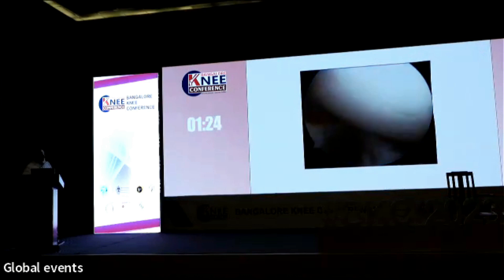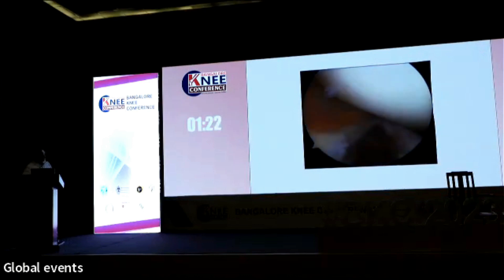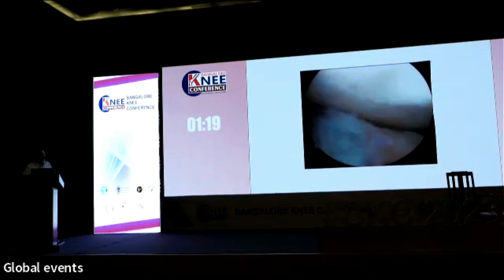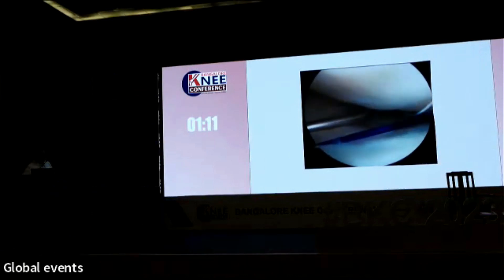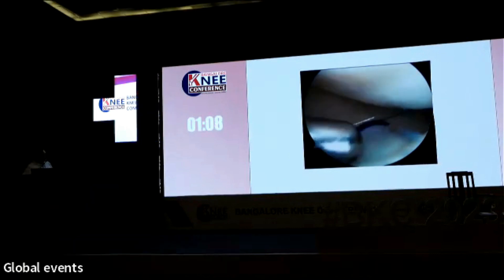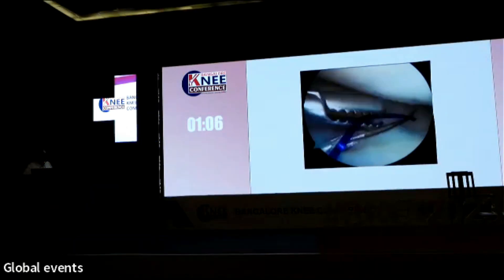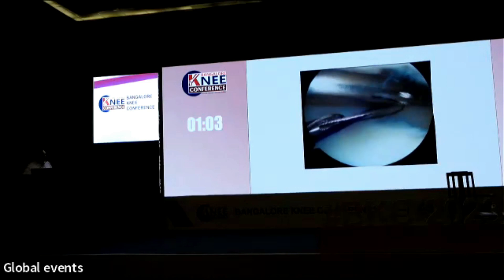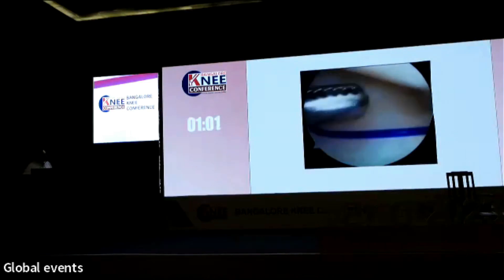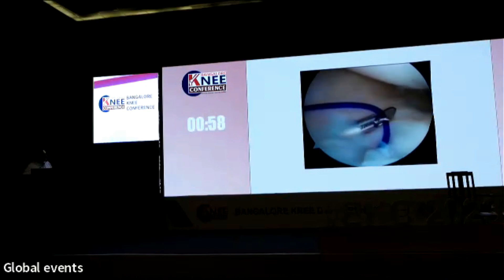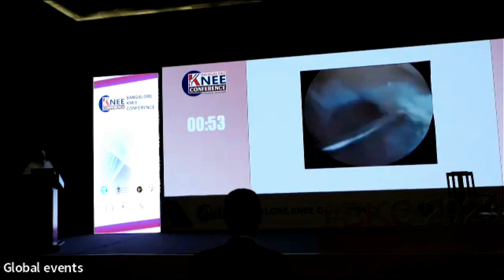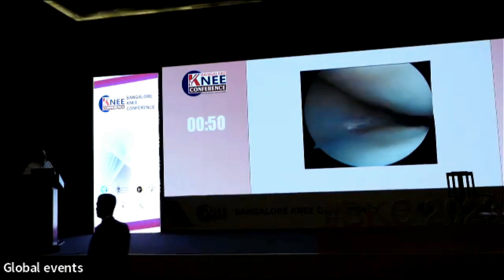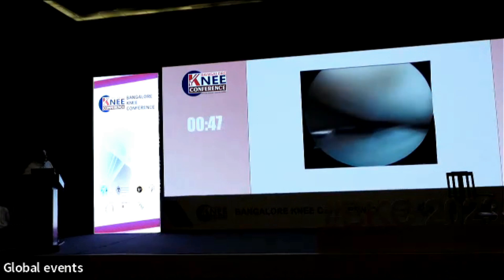The cannula is passed along with the PDS, and the mender device — which has a three-pronged loop — is the second instrument introduced. You can see the steel mender device coming in. It's placed onto the tissue and grasped back, then pulled across into the capsule. You can take two, three, or four bites based on requirement.